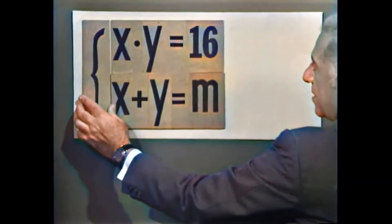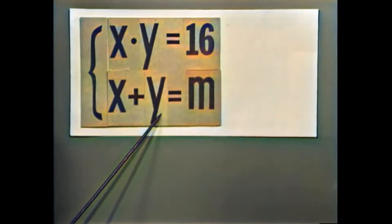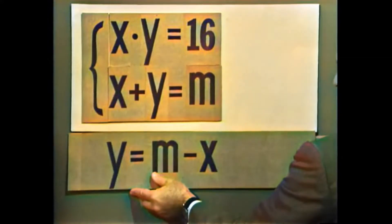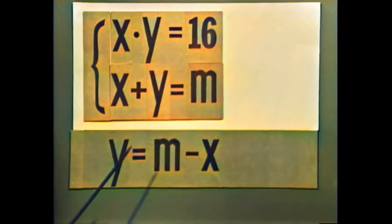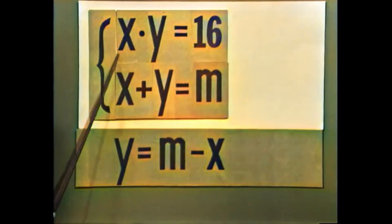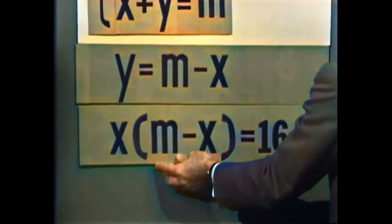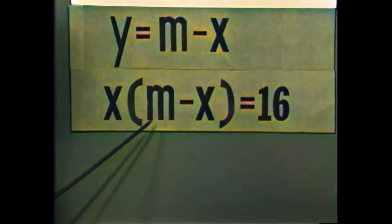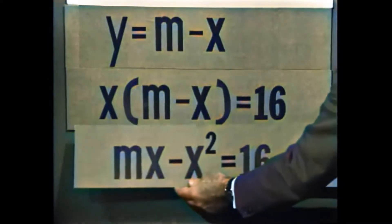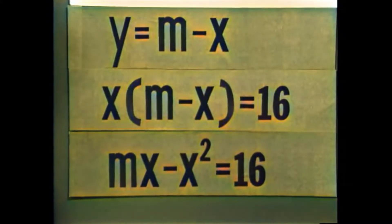נבודד את Y במשוואה השנייה: Y שווה M מינוס X. נציב במשוואה הראשונה: X כפול (M מינוס X) שווה 16, כלומר MX מינוס X בריבוע שווה 16. נסדר ונקבל: X בריבוע מינוס MX פלוס 16 שווה 0.